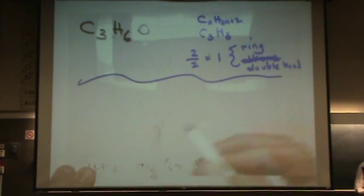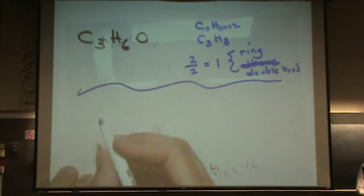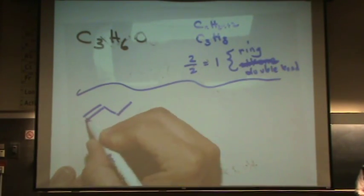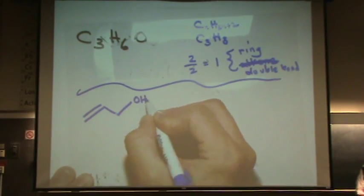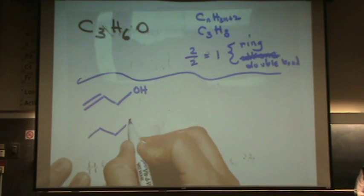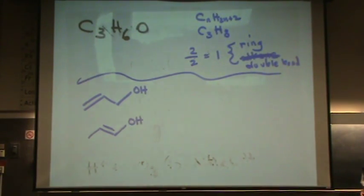So let's start to draw these things out. I need three carbons. I'm going to start with a double bond first, so I can have this kind of a three carbon structure. I'll put the oxygen on there. That's one possibility. What's another possibility? I can move this double bond here.